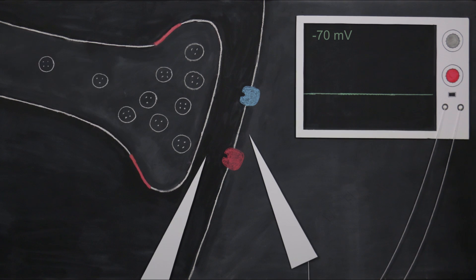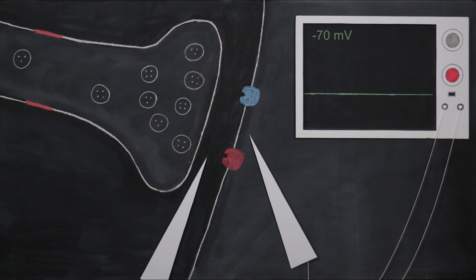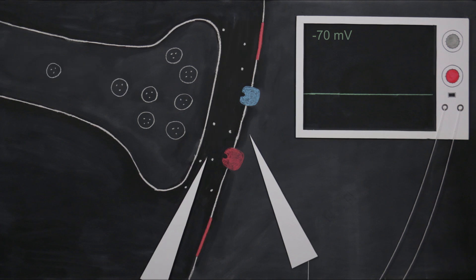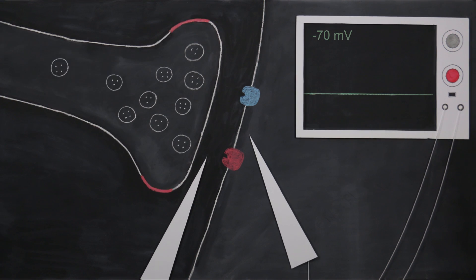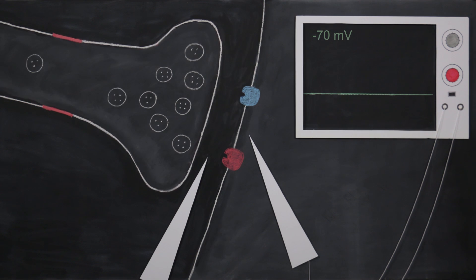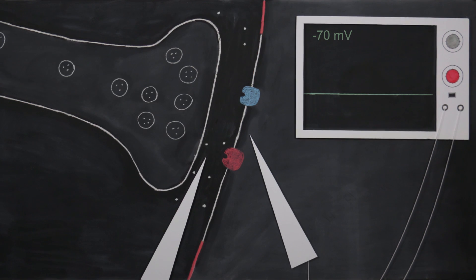EPSPs and IPSPs travel passively from their sites of origin on the postsynaptic membrane in much the same way that electrical signals travel through an electrical cable. And the speed of transmission of postsynaptic potentials is so rapid that it can be considered as instantaneous.